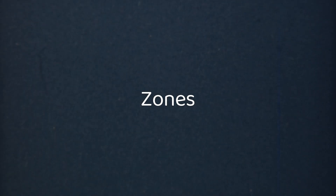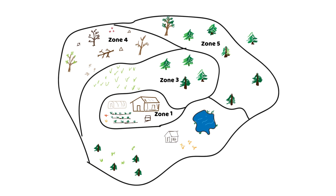Zones refer to the way a space is divided up and how different components are positioned on the site. Components like plants, animals, and buildings are placed inside the zones. Their positions depend on their yields, functions, and maintenance requirements. The idea is to place components so that space, available nutrients, and energies are used efficiently with minimal inputs.